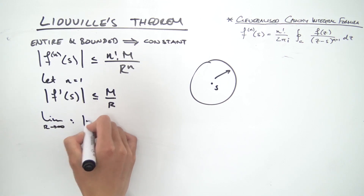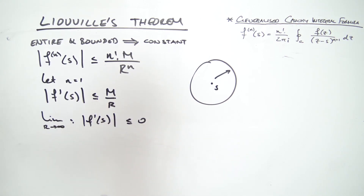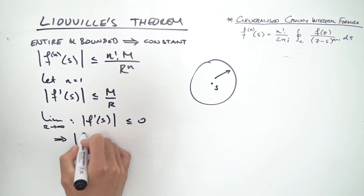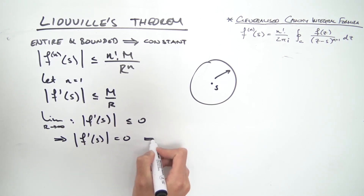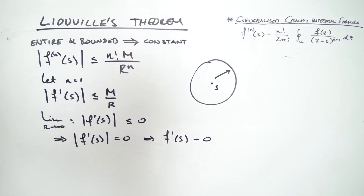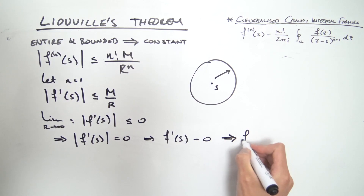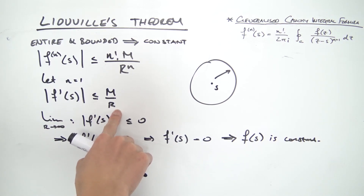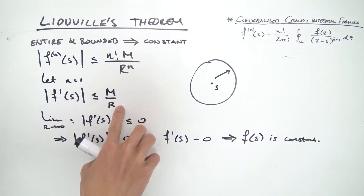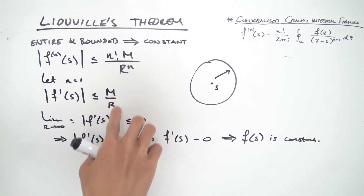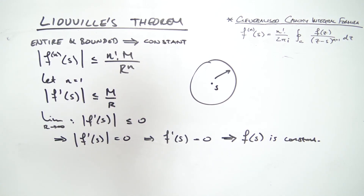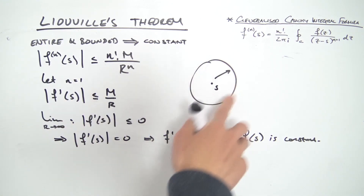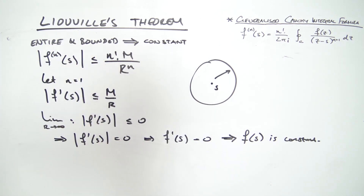Taking the limit as r → ∞, we find that |f′(s)| ≤ 0. Since absolute values are non-negative, this means |f′(s)| = 0, i.e., f′(s) = 0. If the first derivative is zero, the function f is constant. Since s was an arbitrary point in the complex plane, f is constant everywhere — that's Liouville's theorem proved.